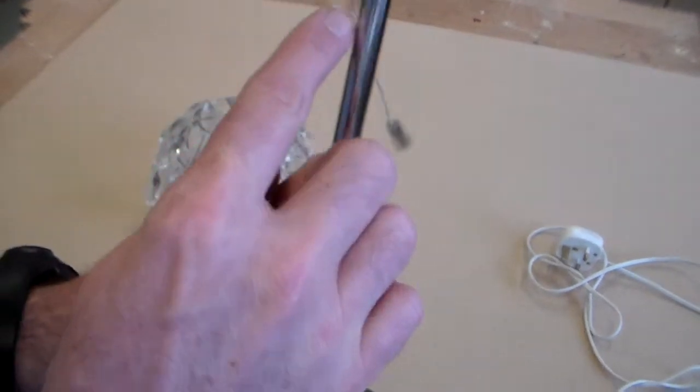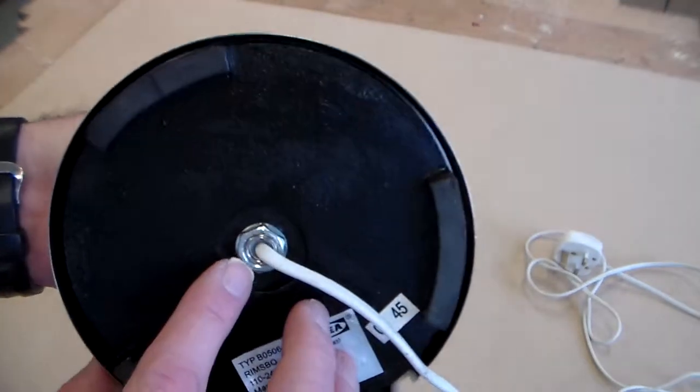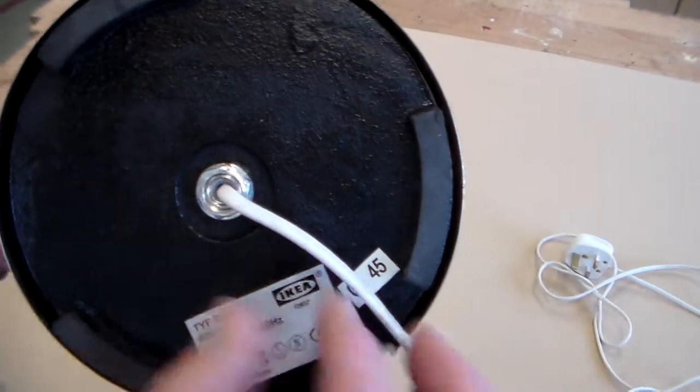The wires from the lamp feed from here down through the tubular part and come out here.